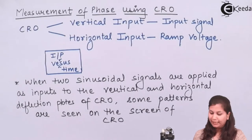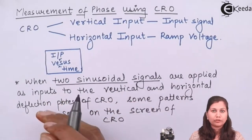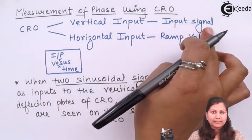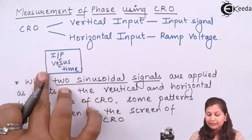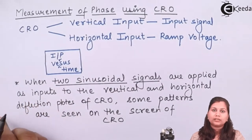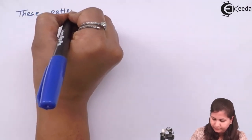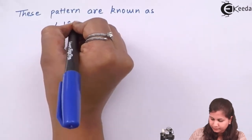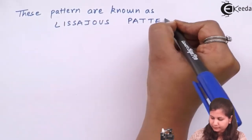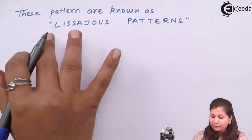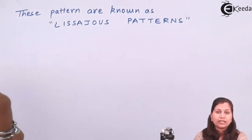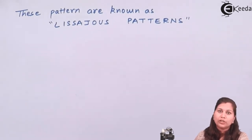This is the special case when we are applying two sinusoidal signals as an input to the CRO. So the vertical input will also be a sinusoidal signal and the horizontal input will also be a sinusoidal signal. The pattern which we obtain on the screen of the CRO is called the Lissajous pattern. These Lissajous patterns can have different shapes, and the shape changes with the change in phase and frequency of the two sinusoidal signals.